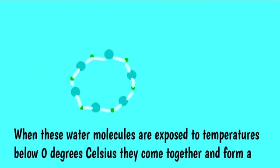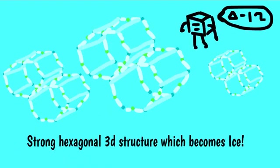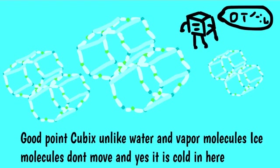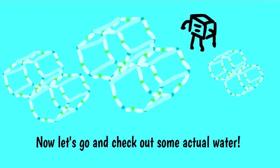When these water molecules are exposed to temperatures below 0 degrees Celsius, they come together and form a strong hexagonal 3D structure, which becomes ice. Good point, Cubix. Unlike water and vapor molecules, ice molecules don't move. And yes, it is cold in here. Now let's go check out some actual water.